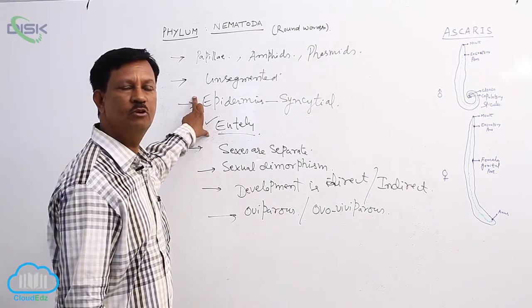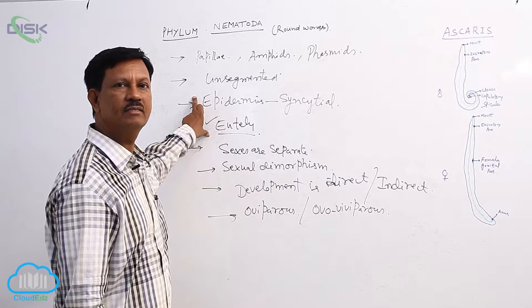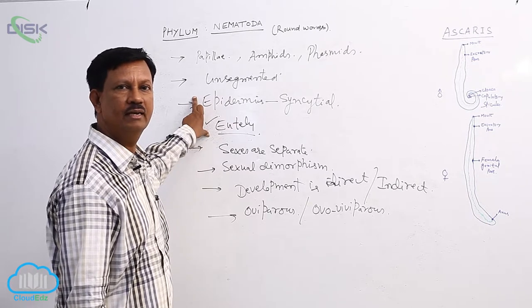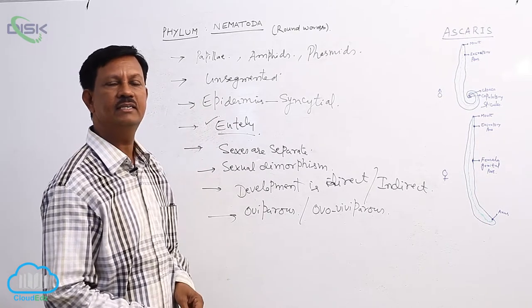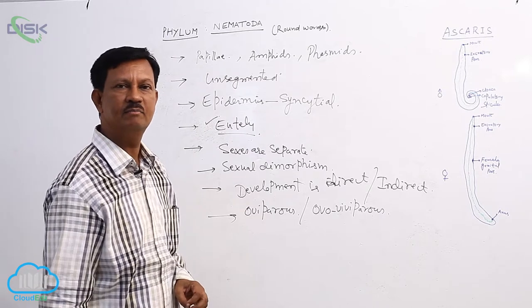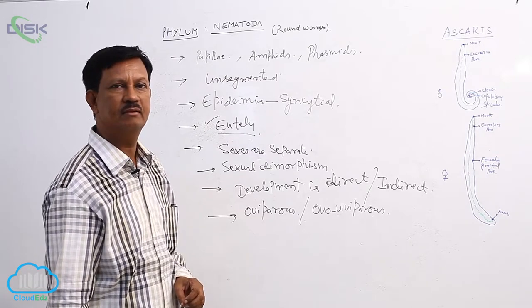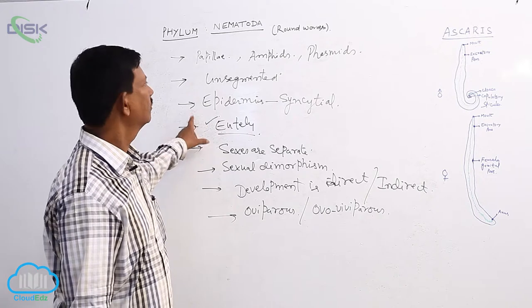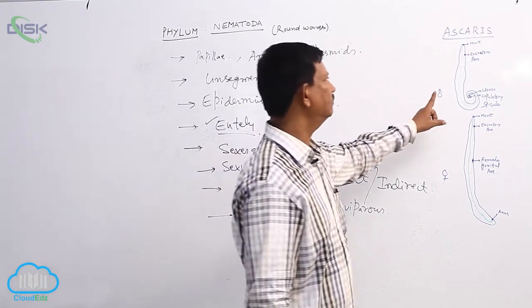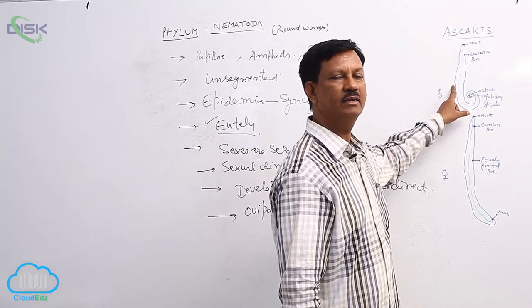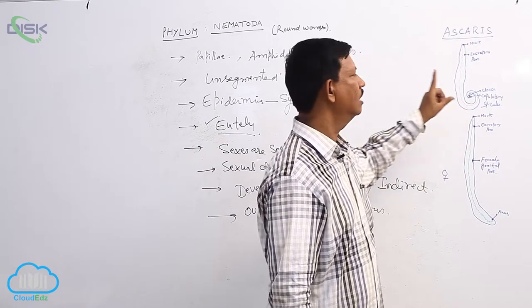They show pseudocoelomate animals. The presence of false coelom in the body is known as pseudocoelomate. Bilateral symmetrical animals, triploblastic animals. Body is externally covered by a tough cuticle which is known as the tegument or cuticle. It gives protection to the body.